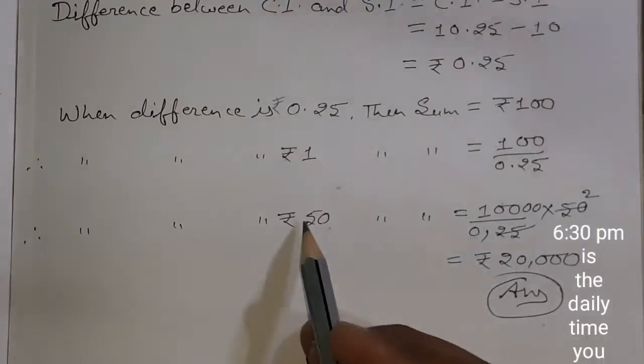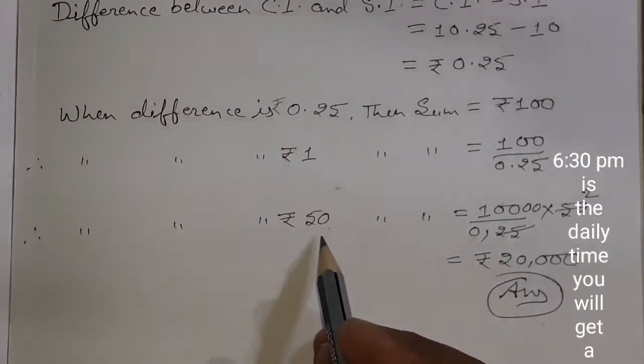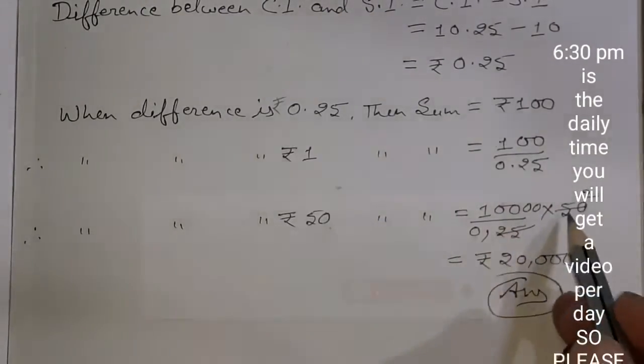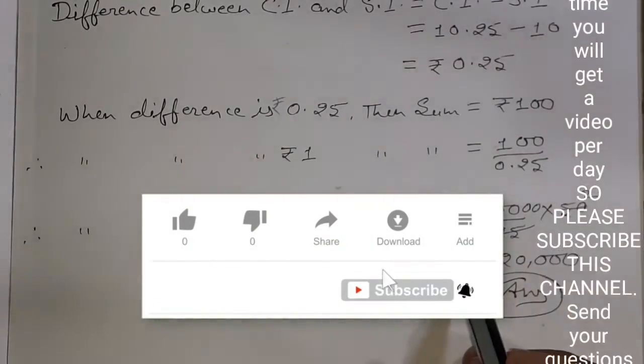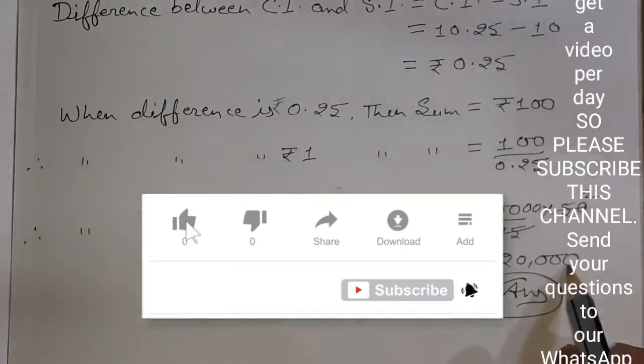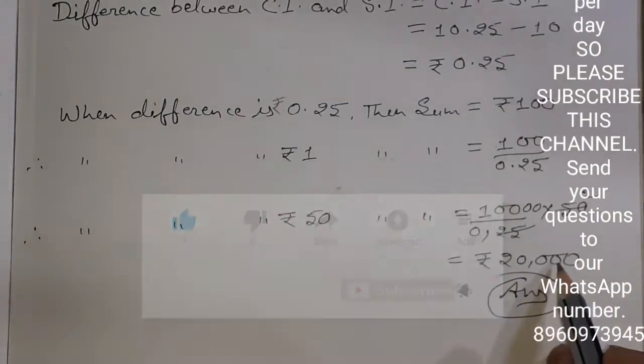For 100 rupees principle, the difference is 0.25. Now we will use unitary method. If the difference is 0.25 for 100 rupees, then for a difference of 50 rupees, we multiply to find out that our principal is 20,000. This is the same as question number four we have solved.